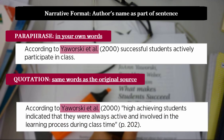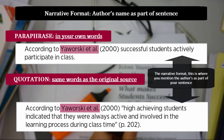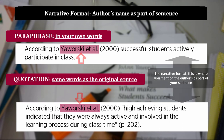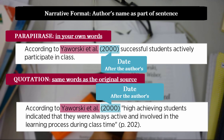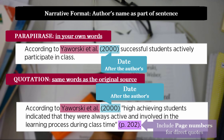When quoting or paraphrasing, you can also use the narrative format. This is where you mention the authors as part of your sentence — you do not need to include them inside the brackets of the in-text citation as shown. Place the date directly after the authors. If you use a direct quotation, you need to include the page number at the end of the quote.